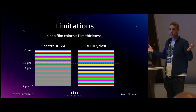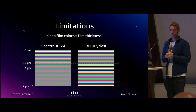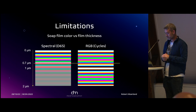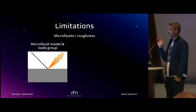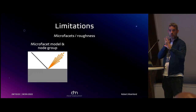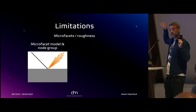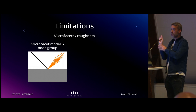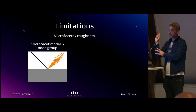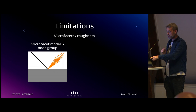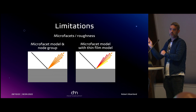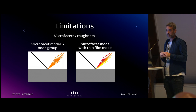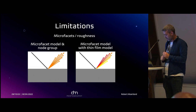The other limitation involves roughness: the microfacet model and this node group don't communicate. The node group calculates the final color for a single incoming ray, but the shader subsamples the space to find the final color. Because they don't communicate, it will always use the color of the node group while sampling, whereas if combined they would calculate the correct color per sample. This is not something I can fix without actually hacking into the Blender code.